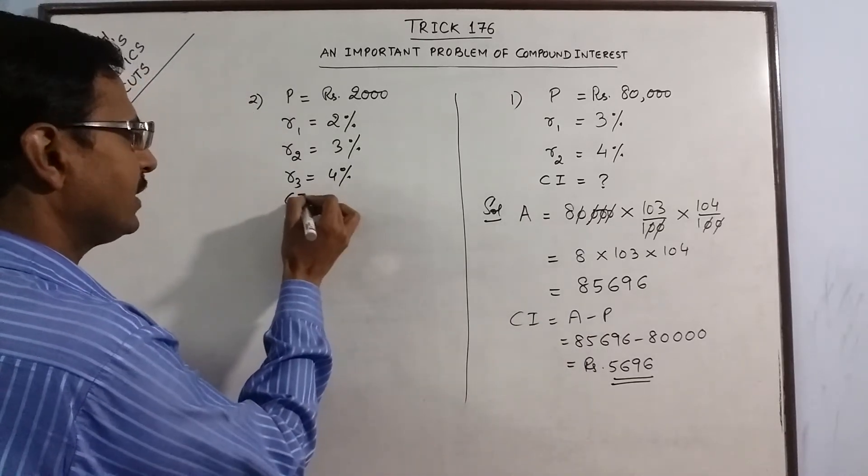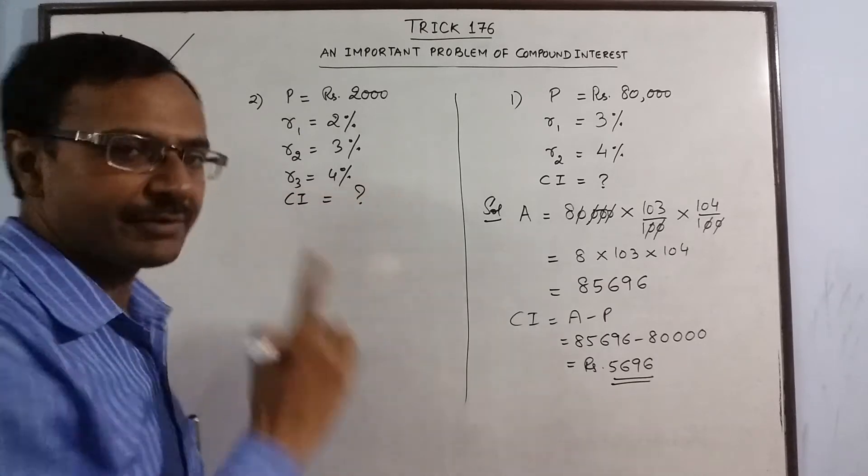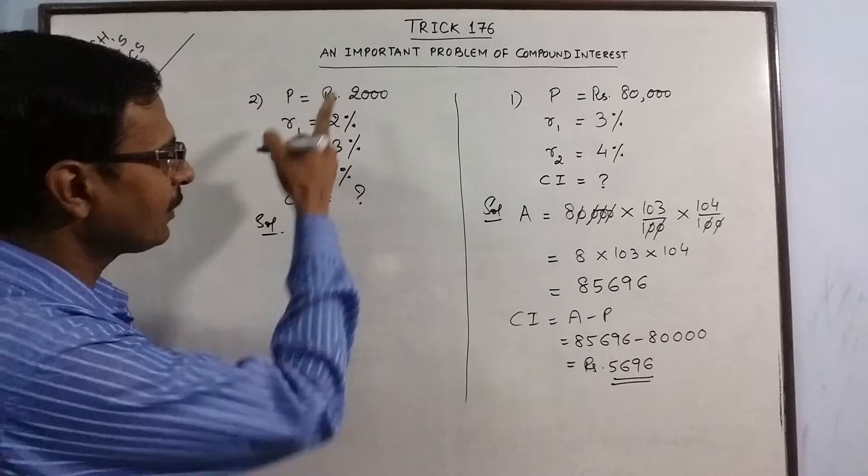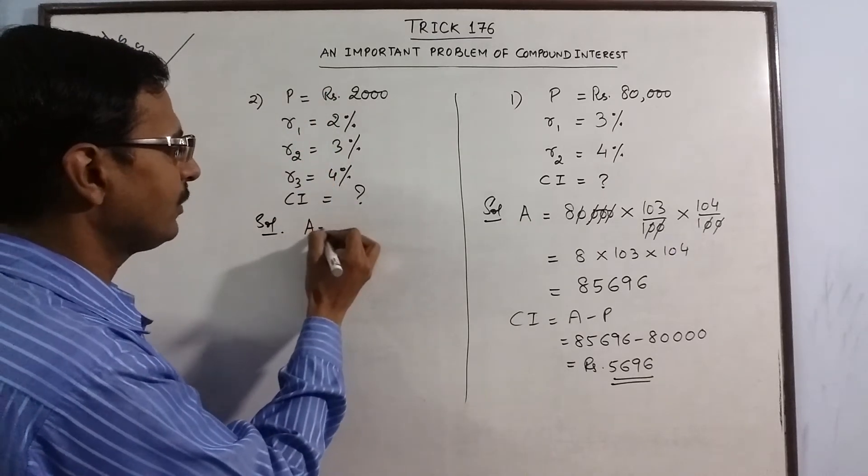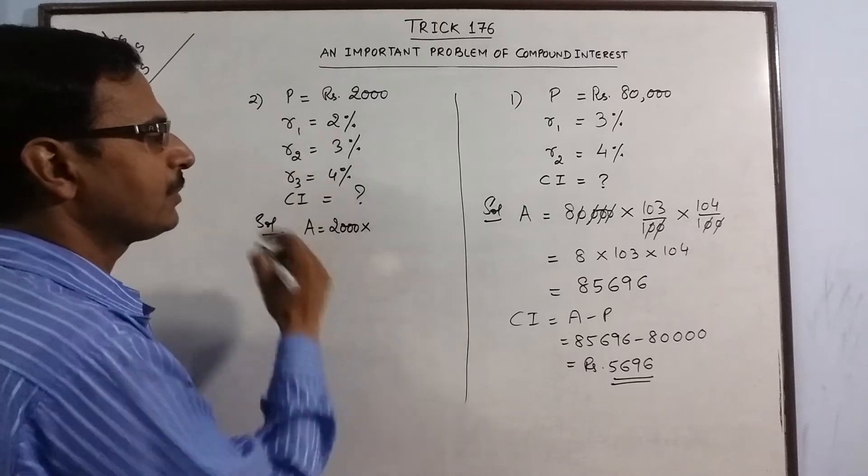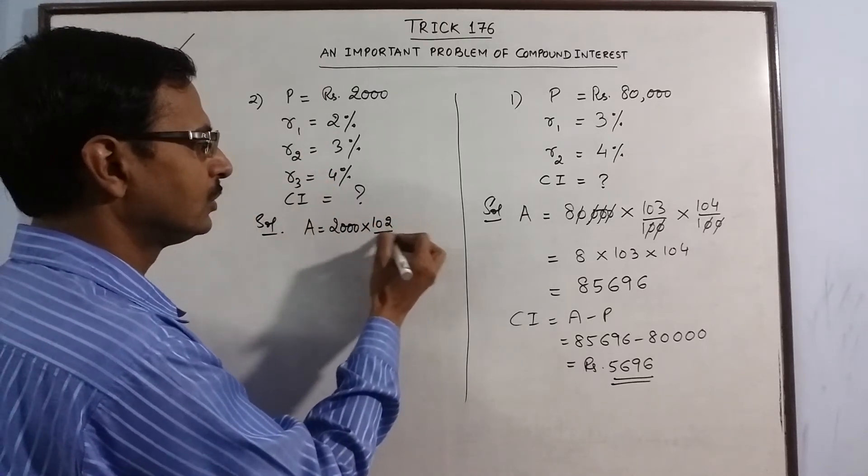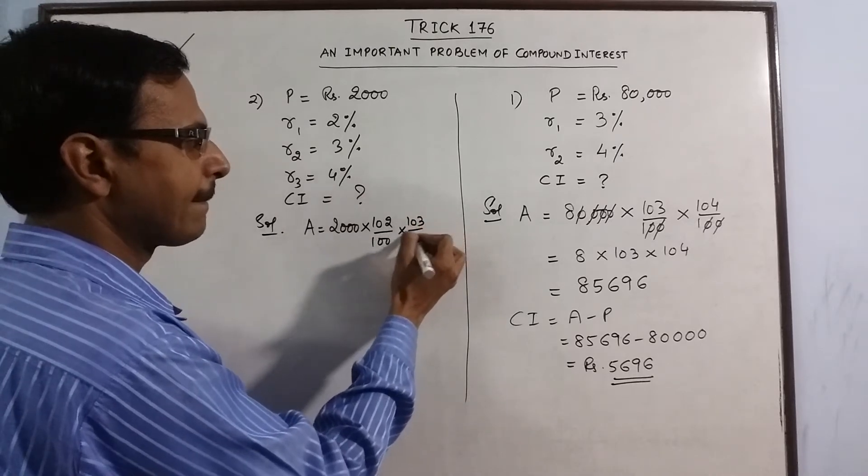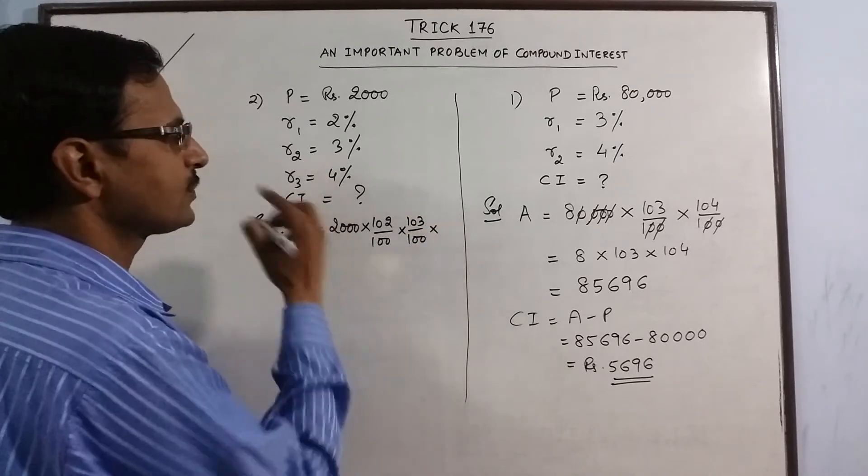So we need to calculate the compound interest obtained after 3 years. Here the principal amount is 2000. So amount will be obtained by 2000, 100 plus 2, 102, 100 plus 3, 103 and 100 plus 4, 104.